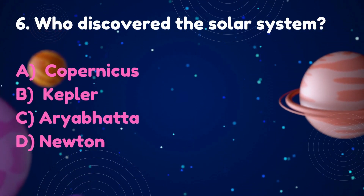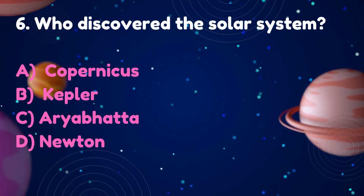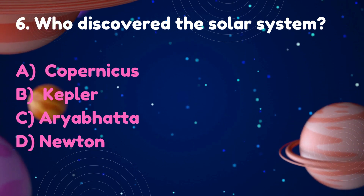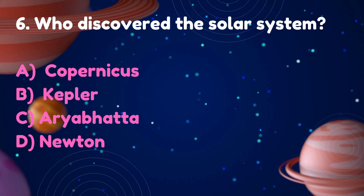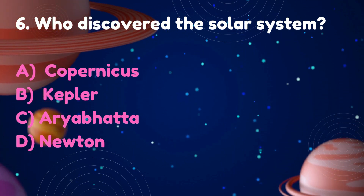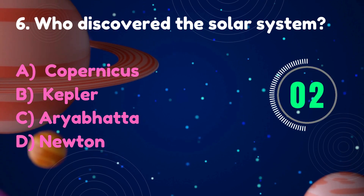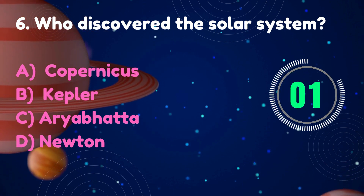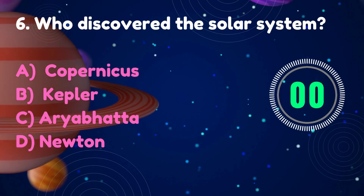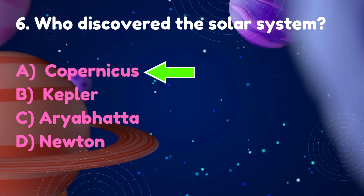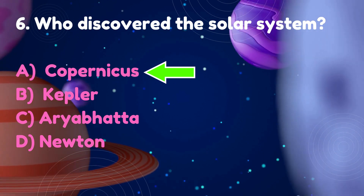Who discovered the solar system? Options: Copernicus, Kepler, Aryabhatta, Newton. Answer: Copernicus.